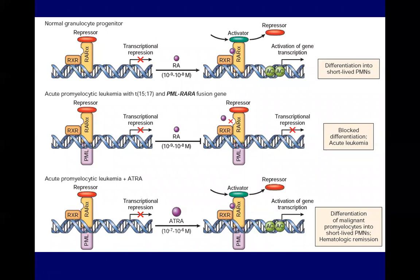This is an example of a translocation used for targeted therapy called differentiation therapy. In the upper portion of the illustration, it shows the normal condition where a neutrophil or other myeloid precursors would be further differentiated. There would be the presence of RXR and RAR, the retinoic acid receptor alpha, which in the presence of retinoic acid would lead to differentiation of myeloid cells.